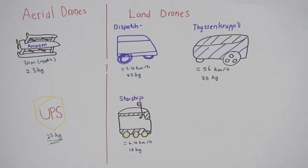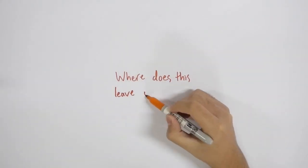In a nutshell, aerial drones are used for light and small packages and land drones are used for heavier and bigger packages. So, where does this leave us?